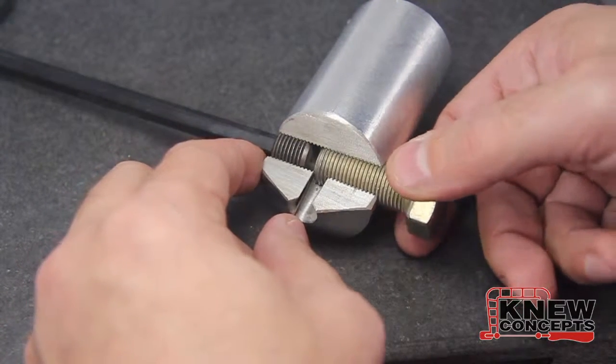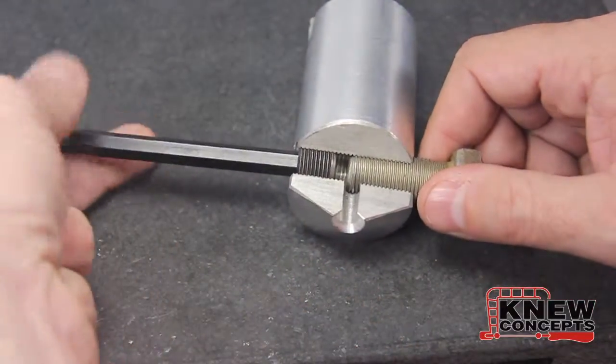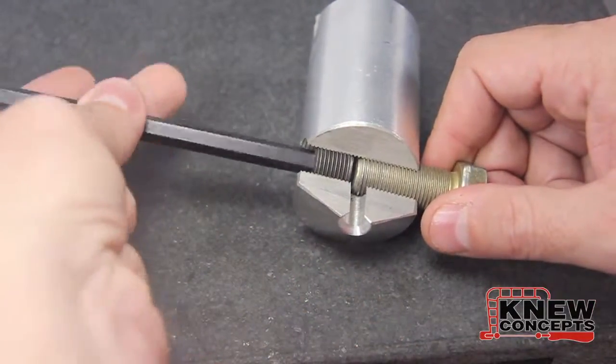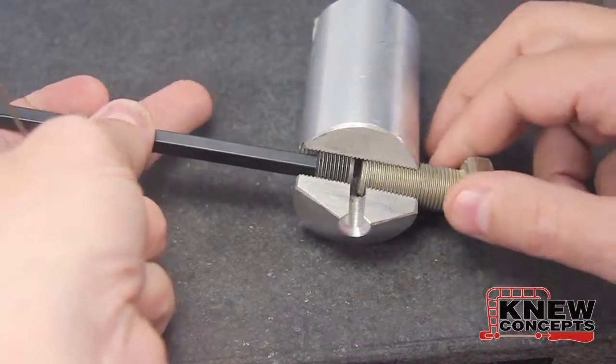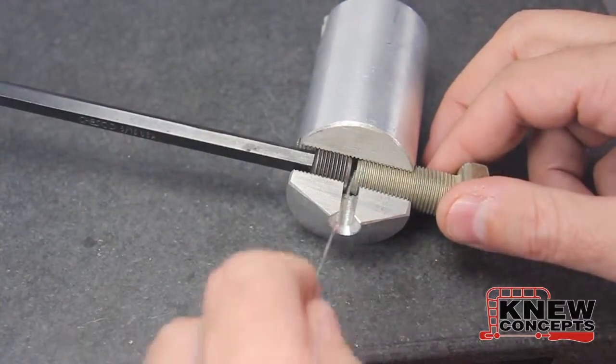All that means is you need to adjust the anvil screw and bring it in so that it's above that hole.